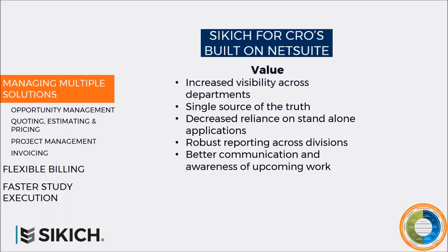I categorize these values into downstream and upstream. Downstream: operations now has visibility into future projects, and finance can automate invoicing and forecast future revenues. Upstream: sales can view project execution to more accurately estimate and price processes based on historical results, and project managers are kept up to date on financial and invoicing statuses.